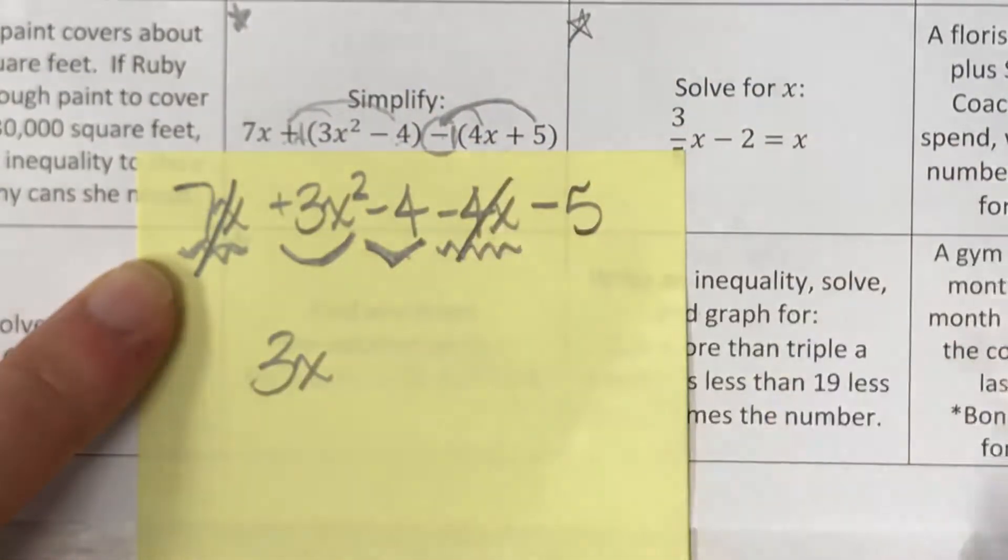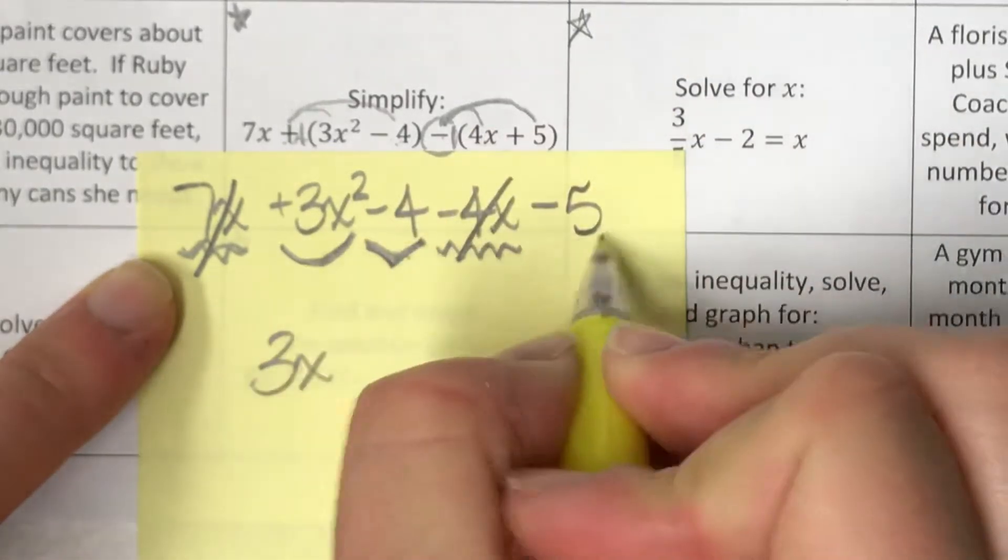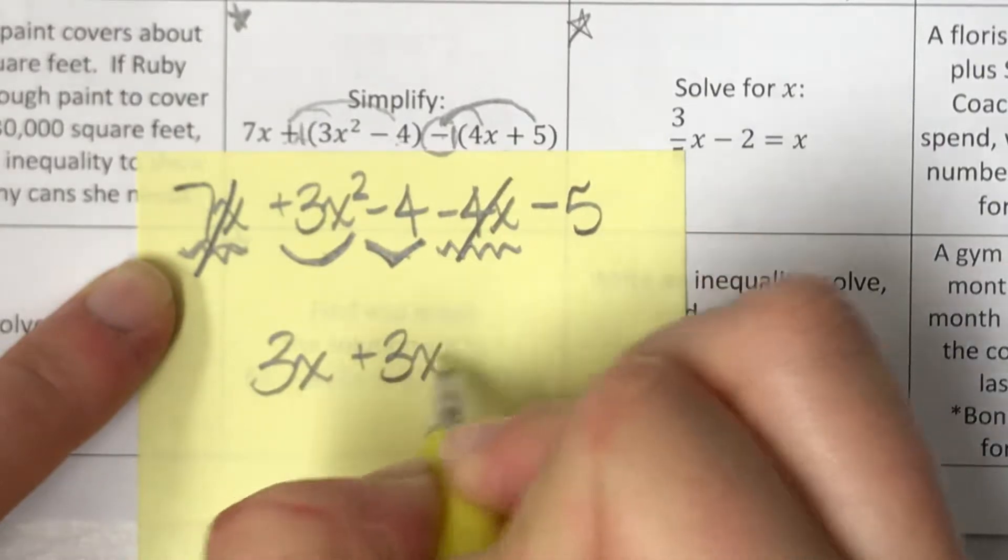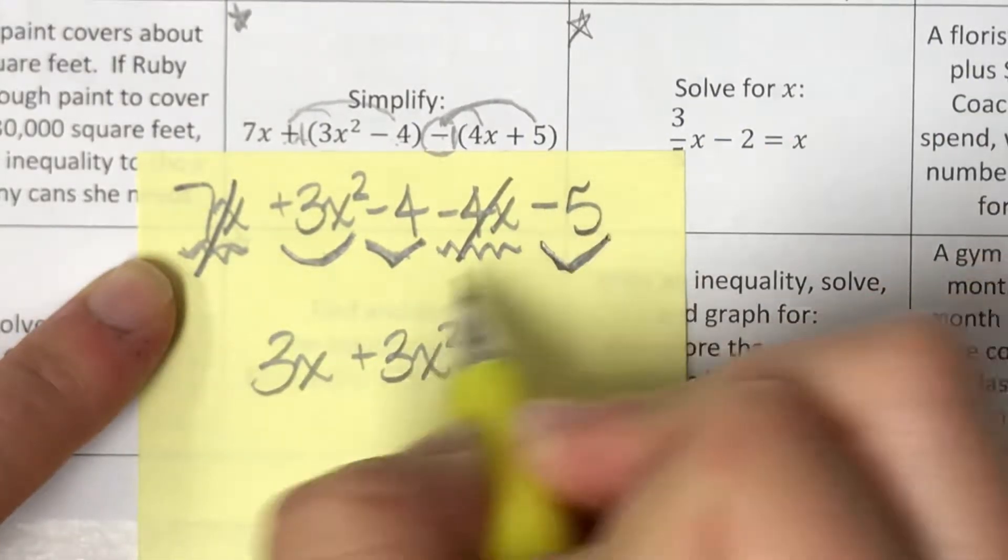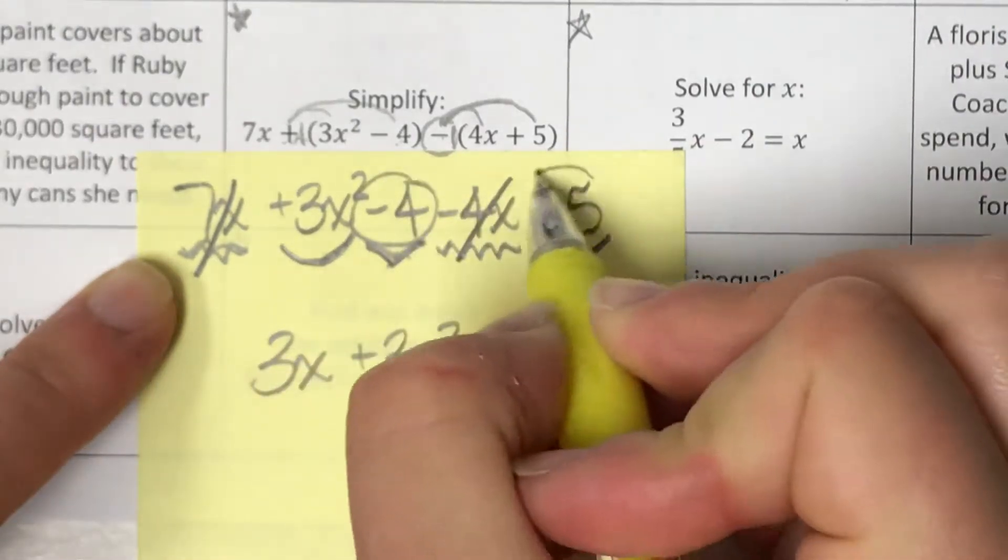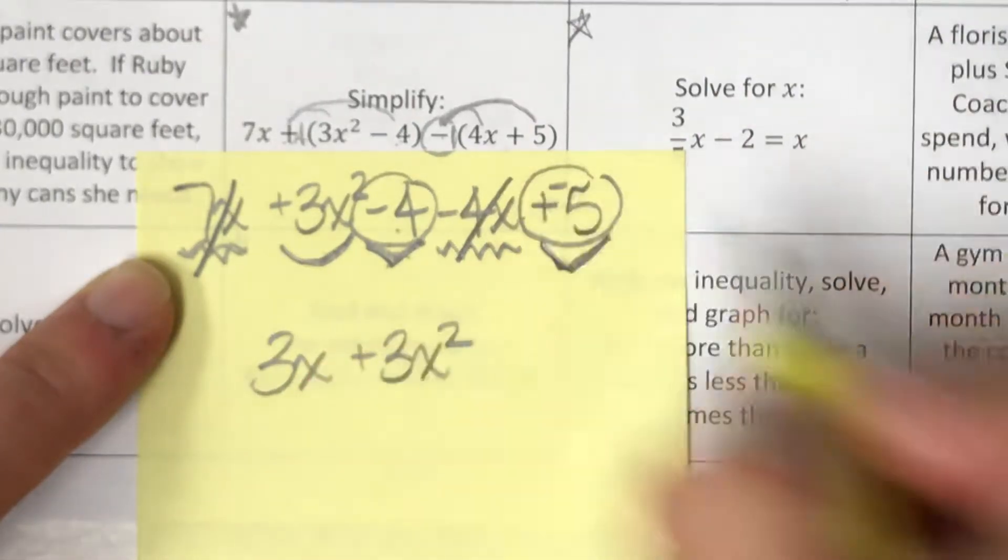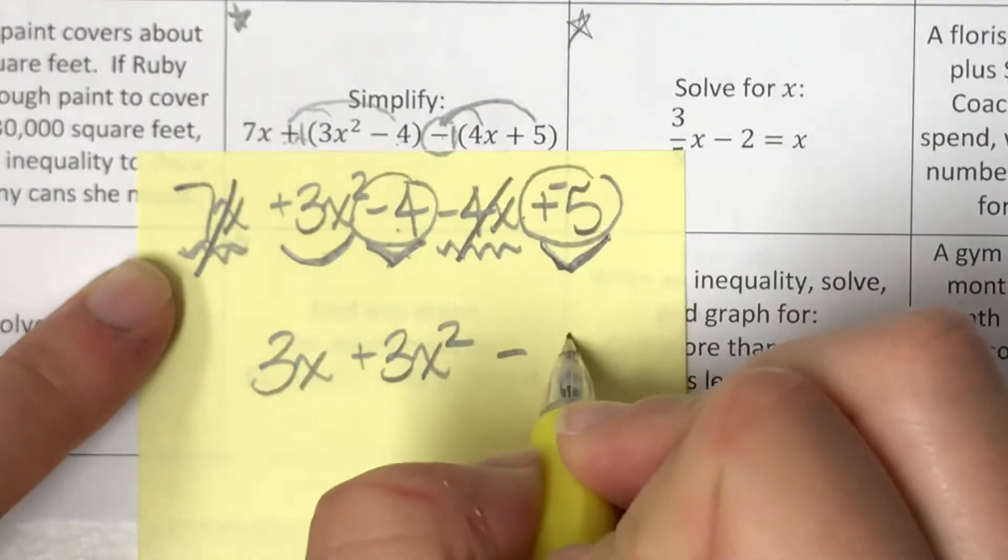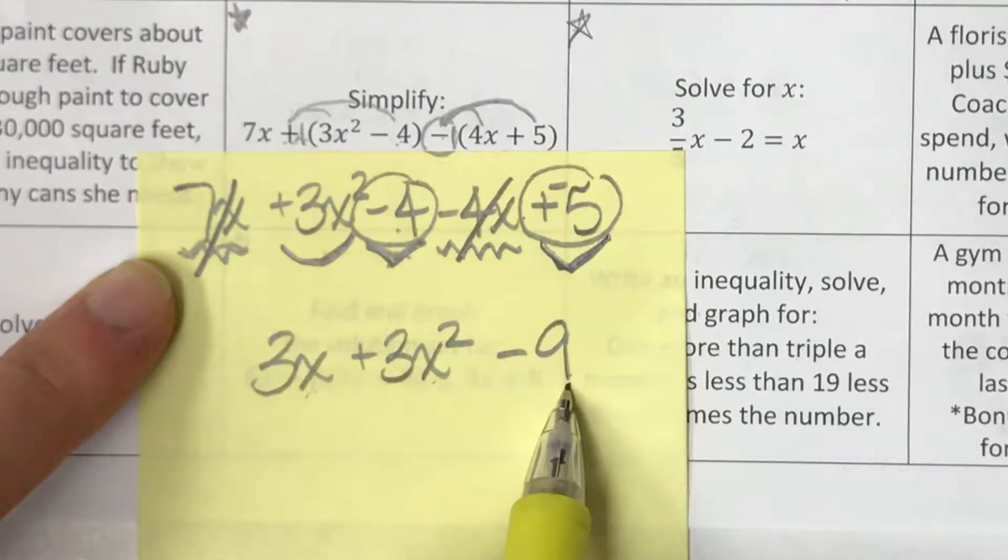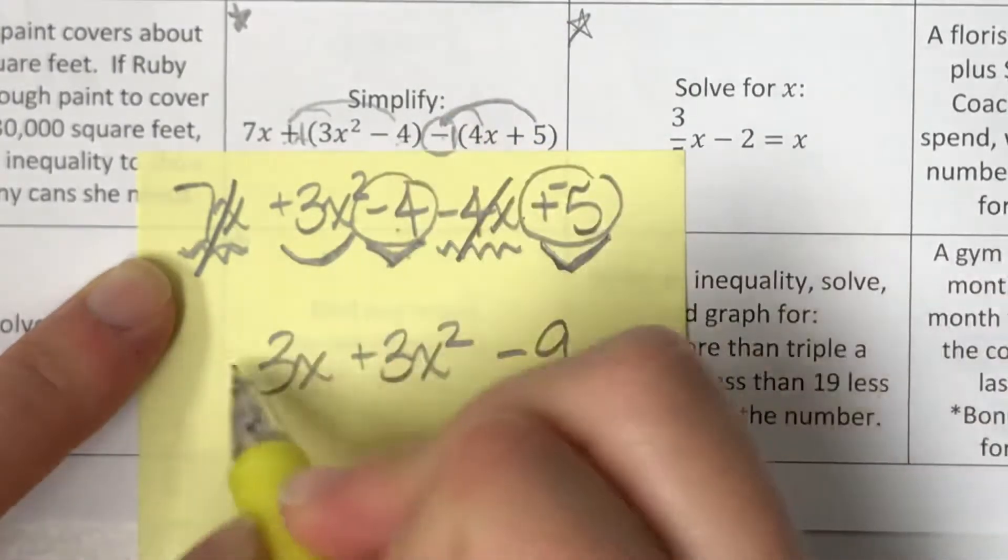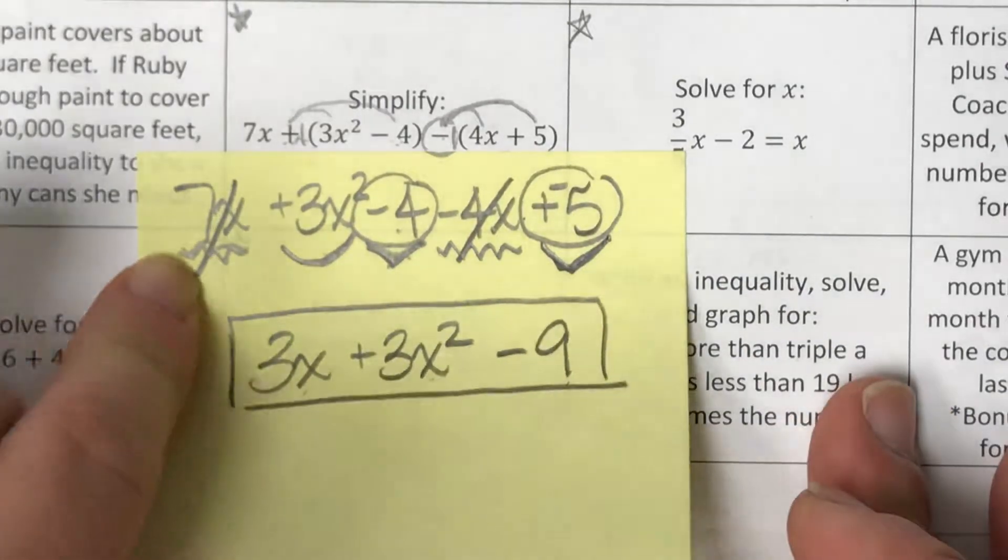7x and negative 4x makes 3x. So I've just combined those two. My 3x squared doesn't really have anything else in like terms, so I'm just going to leave 3x squared. And then this negative 5, I can combine with the negative 4, those two constants. Negative 4 and negative 5, you can view that as plus a negative 5 makes negative 9. At this point, I've got dogs, two-headed dogs, and numbers. So I cannot combine those. Those are not like terms.